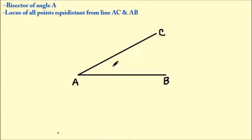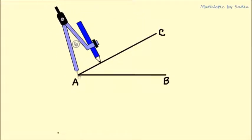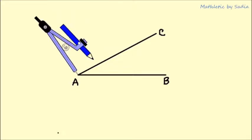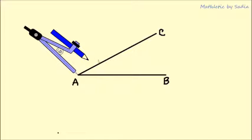In this video I will explain how to bisect angle CAB. First, place the needle at point A, then select a random distance between the two legs and draw an arc.